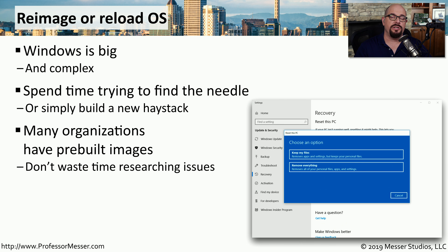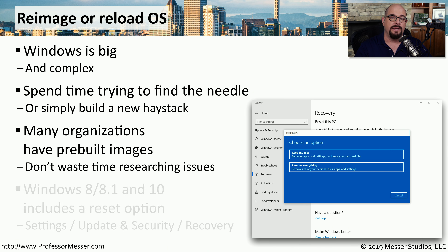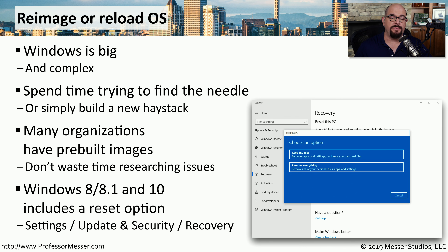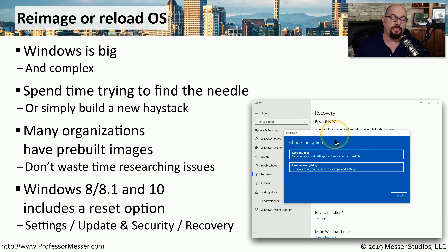For that reason, many organizations will have pre-built images that they know work properly in their environment. If you run into a problem in Windows that's difficult to troubleshoot, it can often be much faster to re-image the system than to find the root cause. If you're on a home computer, you may not have a pre-built image, so you can use the built-in capabilities within Windows 8.1 and Windows 10 to perform a reset. You'll find that under Settings, Update and Security, and Recovery. Inside the recovery settings, you have the option to reset a PC where you can either keep your files or remove everything and start fresh.